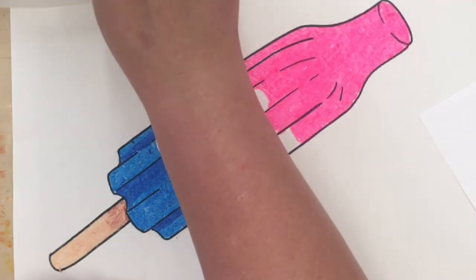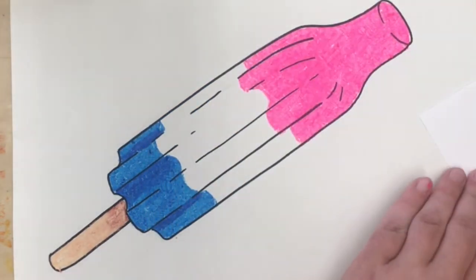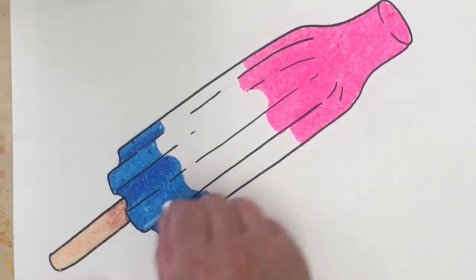For the shading on the white part of my popsicle, because I am doing a modified version of the classic kind of bomb pop with pink in place of red, I'm going to use blue very lightly on the white and I'm going to use my white oil pastel to blend it in.